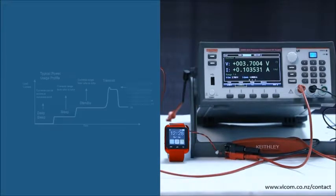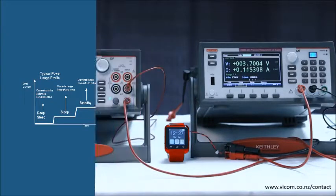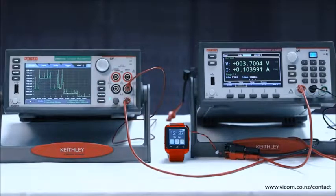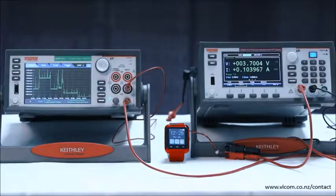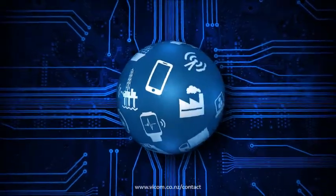You need a supply that can maintain a stable voltage like a battery, even when your device makes a fast and large transition from standby mode to transmitting mode. The 2280S has a 50 microsecond transient response to supply a steady voltage, even under your device's most demanding load changes.